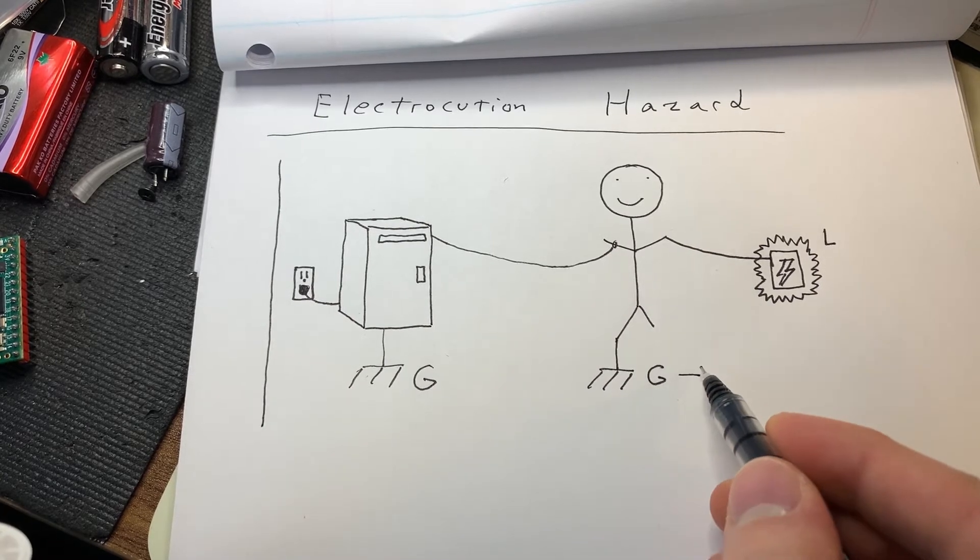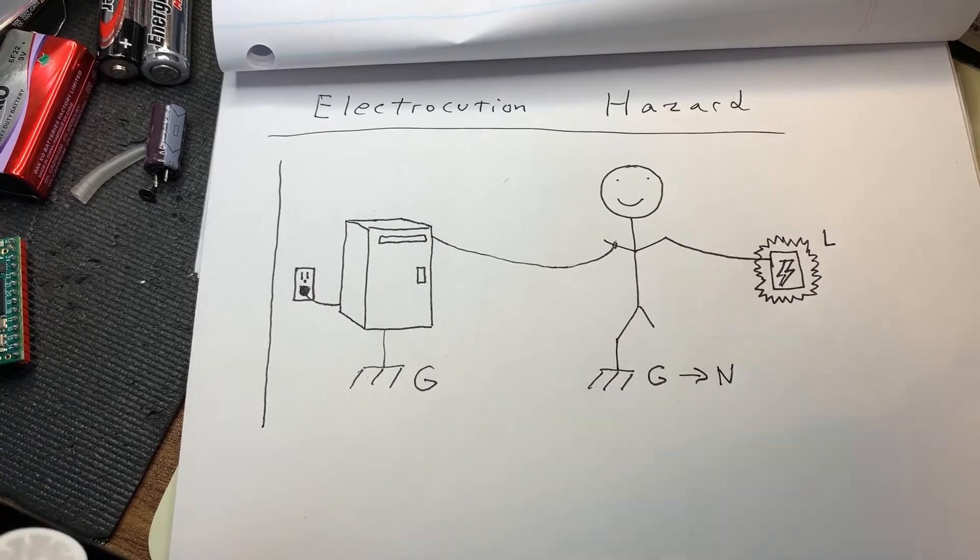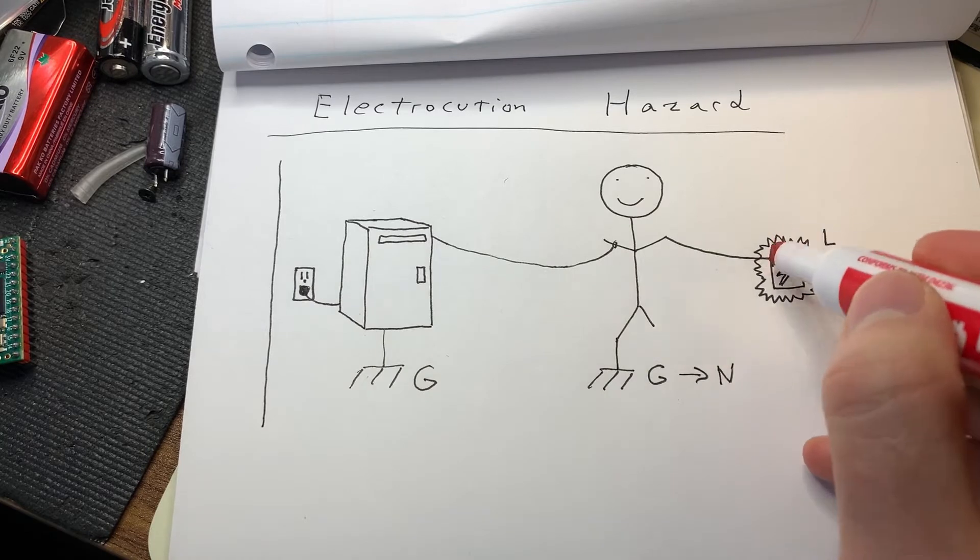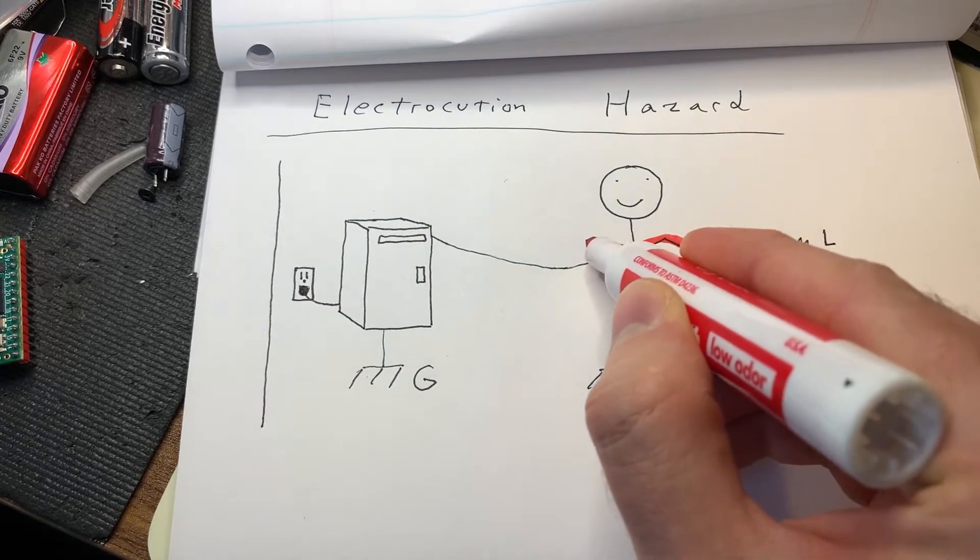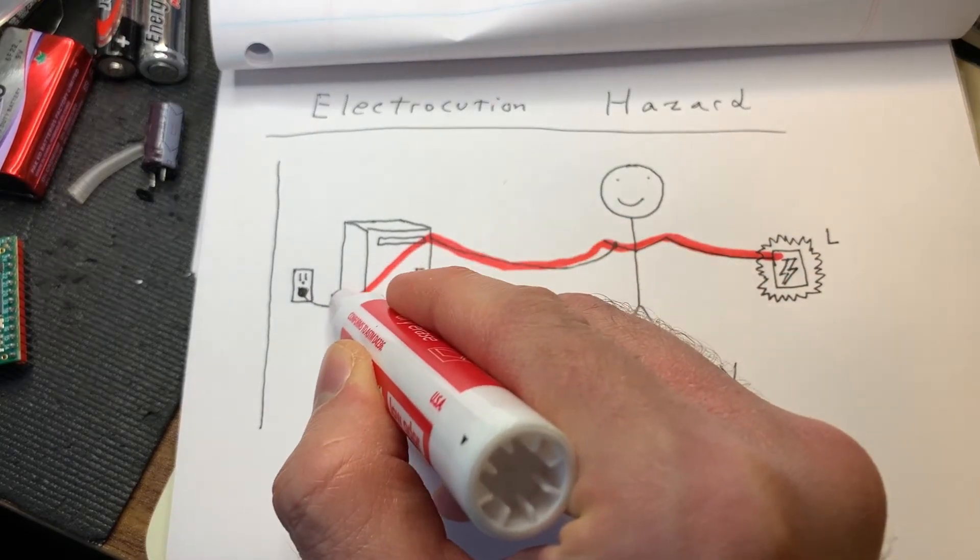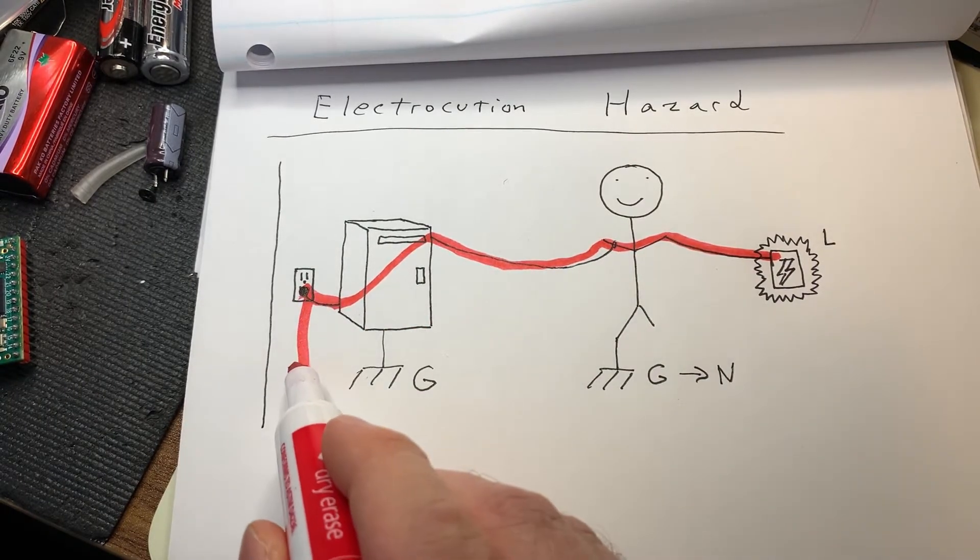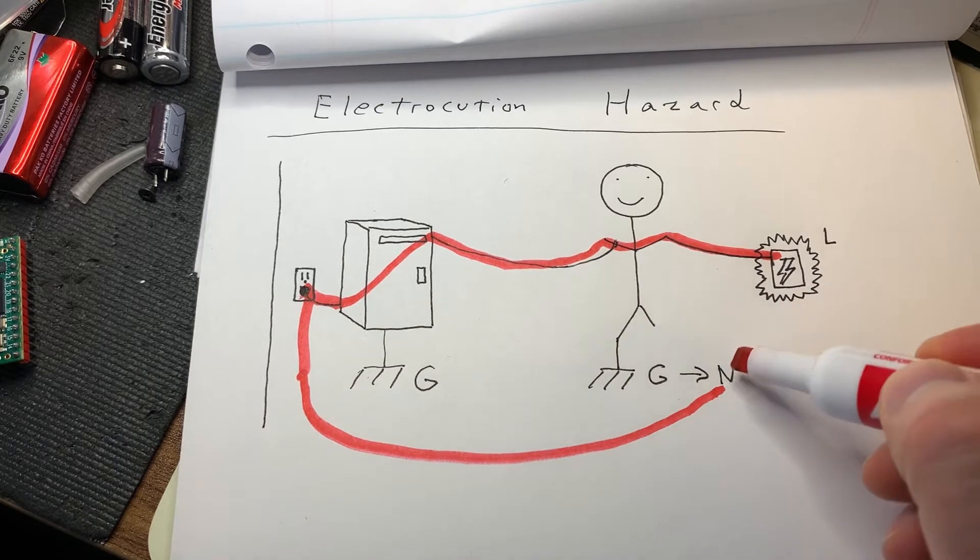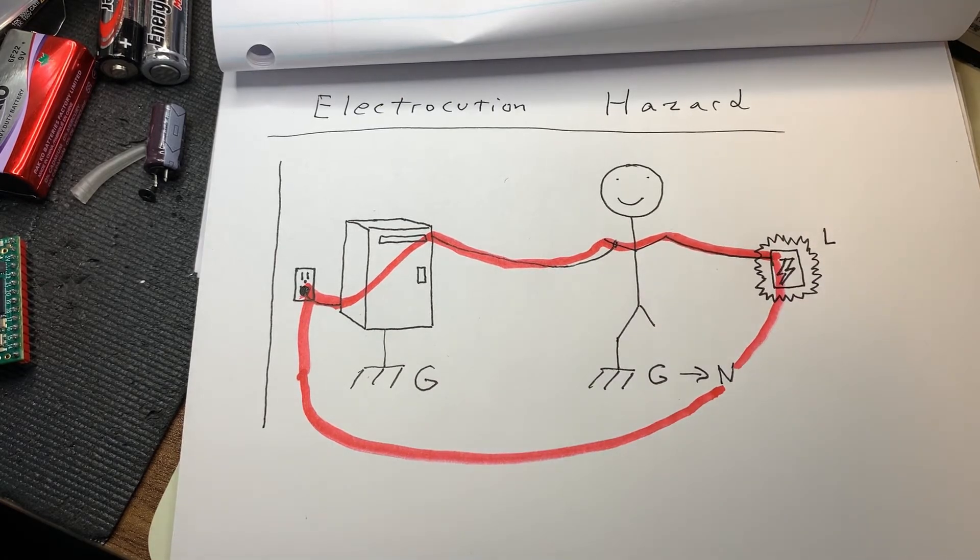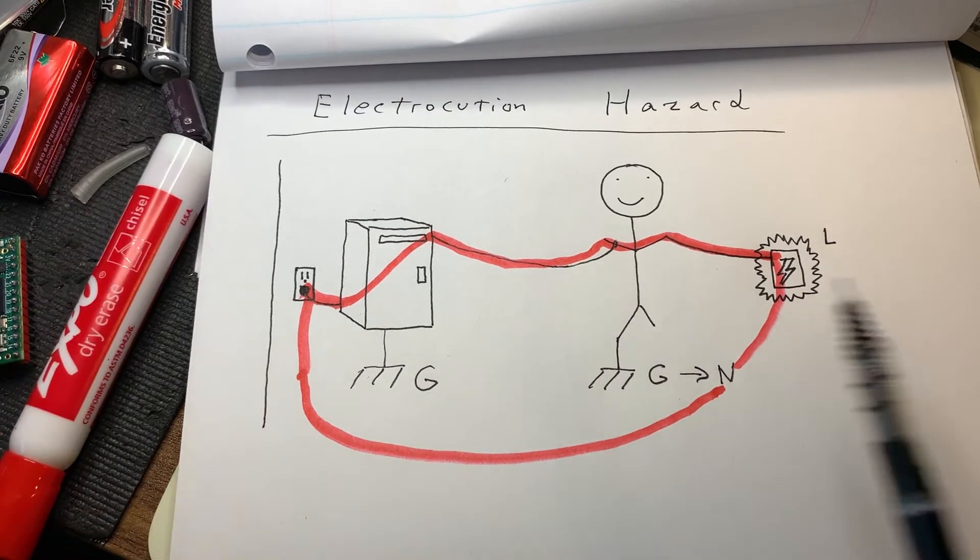And since we know that ground is eventually going to go back to neutral, the power from this is going to go from this device through you to your computer, to the outlet, and then back to ground. And in that case, ground is going to go back to neutral. And there you go, you've just completed a circuit with you in the center.